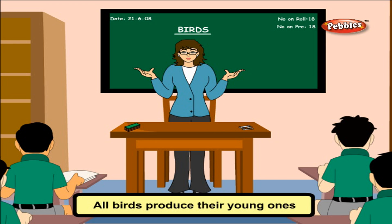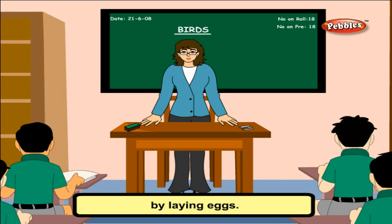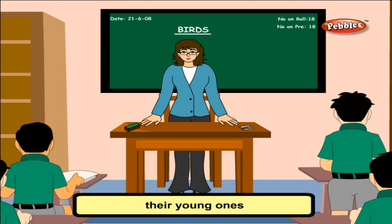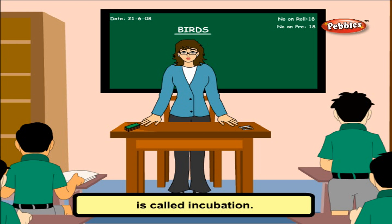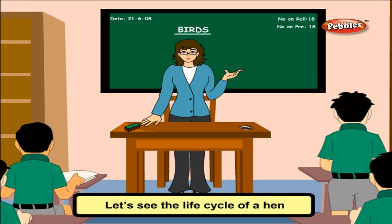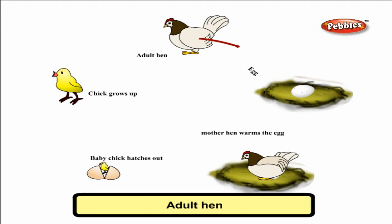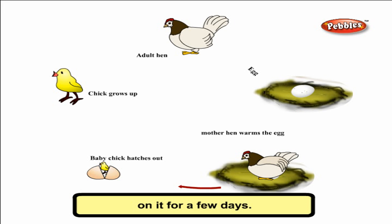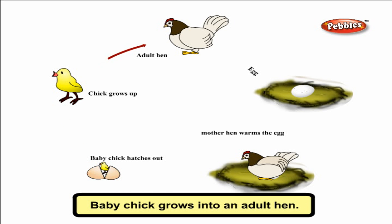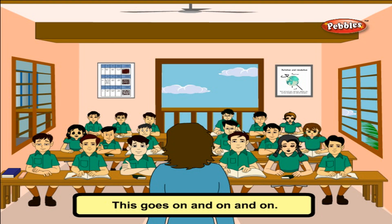All birds produce their young ones by laying eggs. Some birds build different types of nests to lay eggs and to raise their young ones. The sitting of animals on their eggs to keep them warm is called incubation. The life cycle of a hen: an adult hen lays eggs, warms them by sitting for a few days, a chick comes out, the baby chick grows into an adult hen, and the cycle goes on.